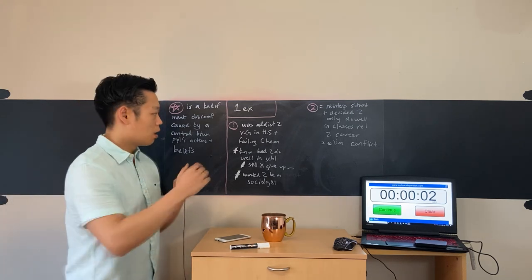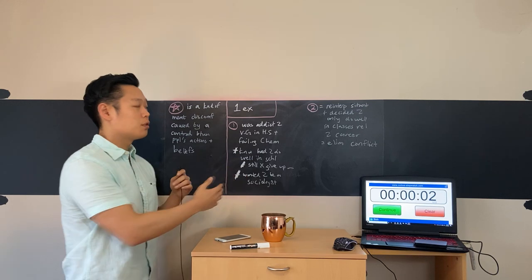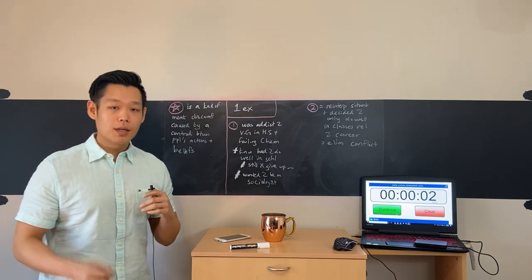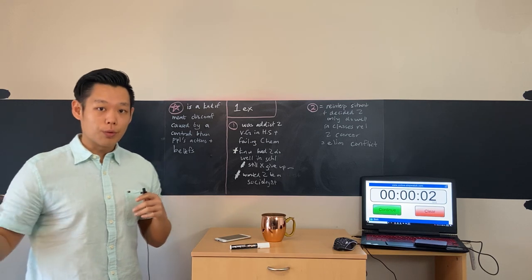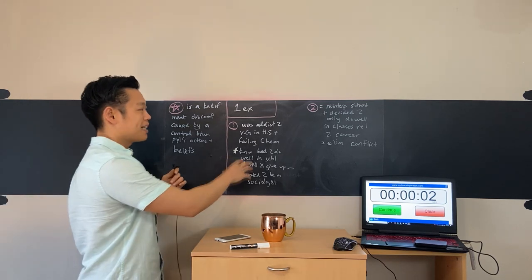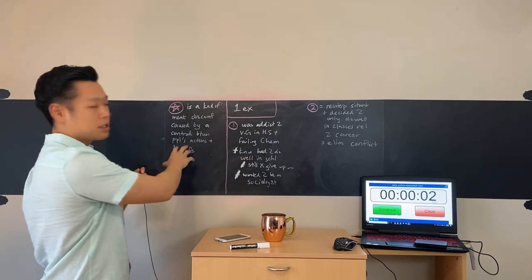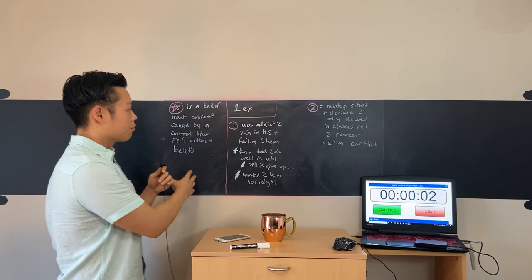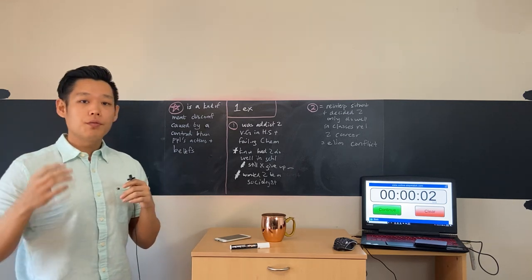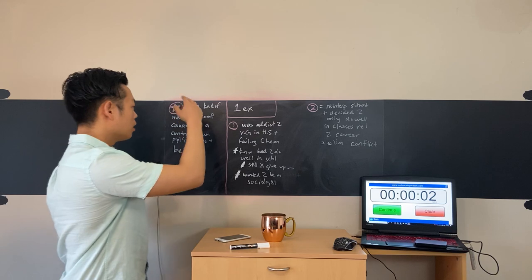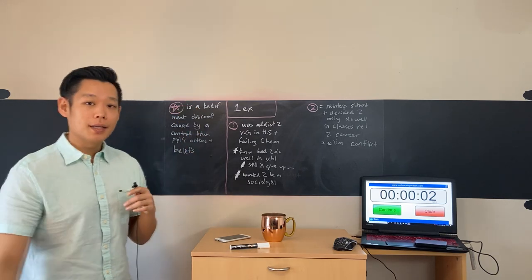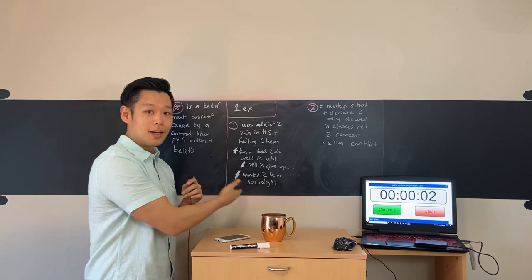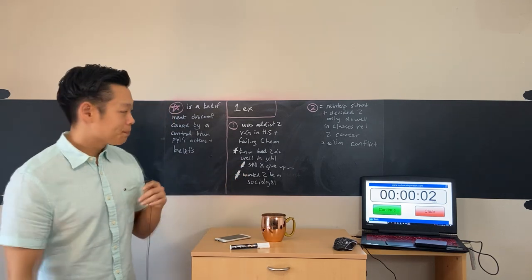My philosophy is this: summarizing the lecture's information is clearly more difficult and more important in the eyes of the TOEFL grader. So prioritize that first. Mention the reading's information — the definition — at the end of your response only if you have enough time. Save it for the end because the lecture summary is priority number one.